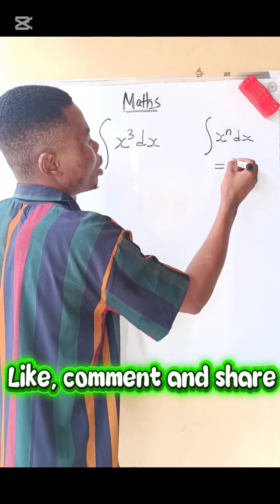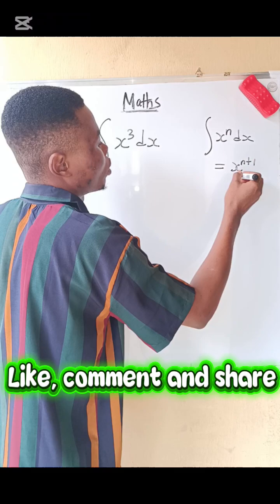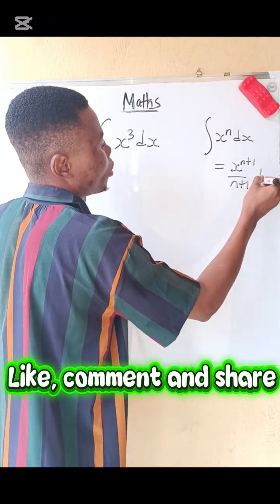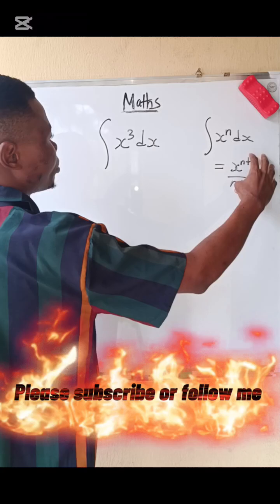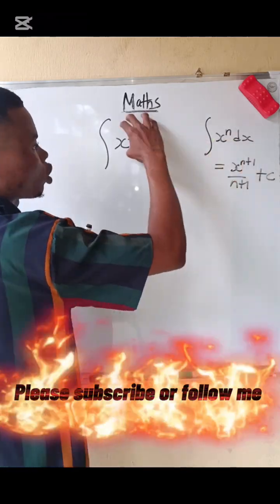answer is x power n plus one all over n plus one, plus a constant c. So we are going to apply this same formula to solve this one now.